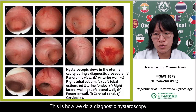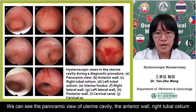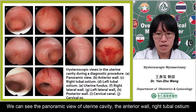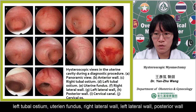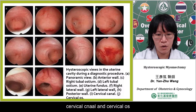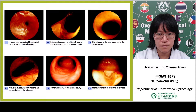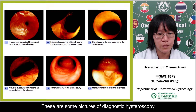This is how we do a diagnostic hysteroscopy. We can see the panoramic view of uterine cavity: the anterior wall, right tubal ostium, left tubal ostium, uterine fundus, right lateral wall, left lateral wall, posterior wall, cervical canal, and cervical vaults.